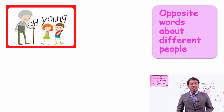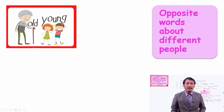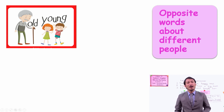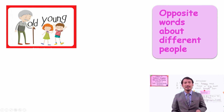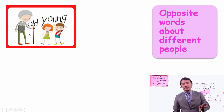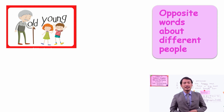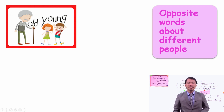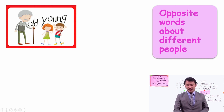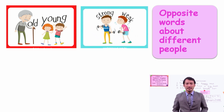Can you see this picture here? There is an old man and there are young children. So old and young are opposite words. Old means you are having more age, and young means you are just in few years.